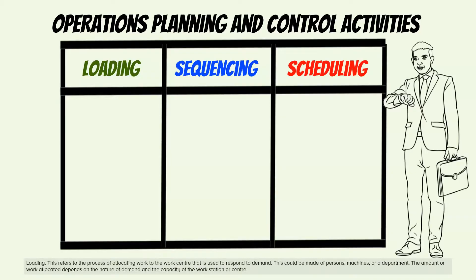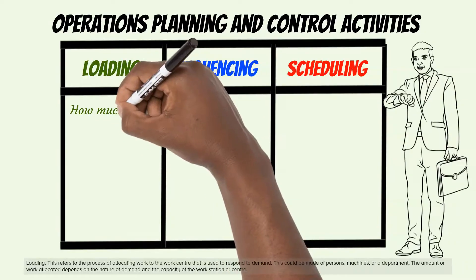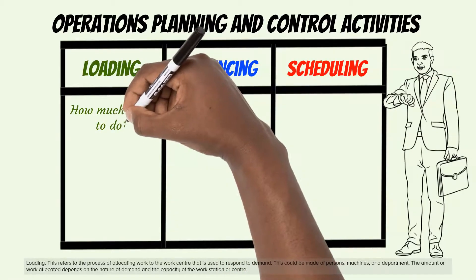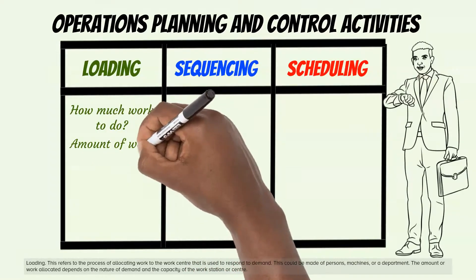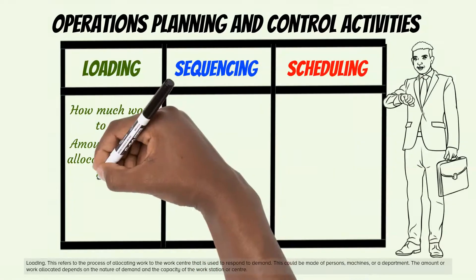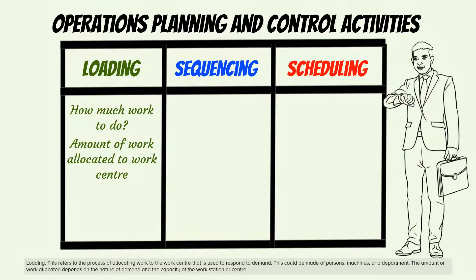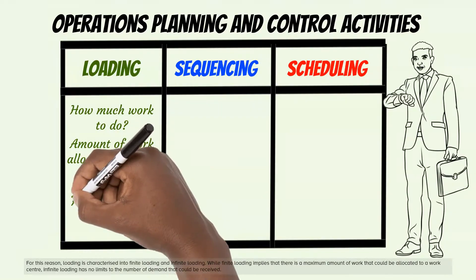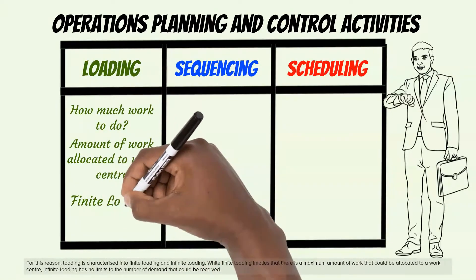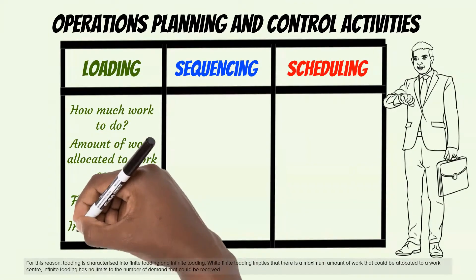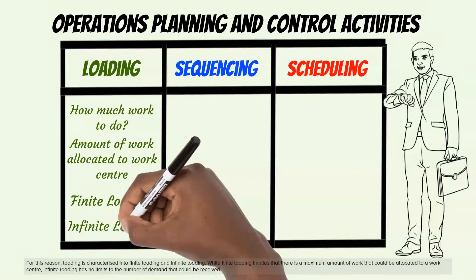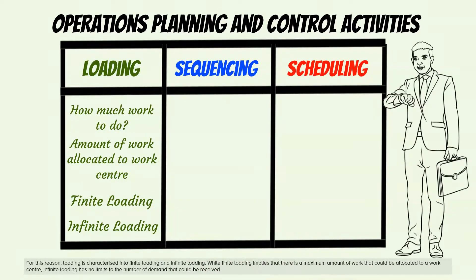Loading refers to the process of allocating work to the work center used to respond to demand. This could be made up of persons, machines, or a department. The amount of work allocated depends on the nature of demand and the capacity of the workstation or center. For this reason, loading is characterized into finite loading and infinite loading. Finite loading implies there is a maximum amount of work that could be allocated to a work center, while infinite loading has no limits to the number of demands that could be received.